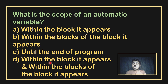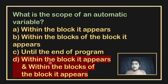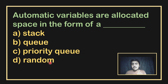What is the scope of an automatic variable? The scope of an automatic variable is local. When the function finishes, it is destroyed. The options are: within the block it appears, within the block of the block it appears, within the end of the program, or both within the block it appears and the block of the block it appears. The answer is option D.